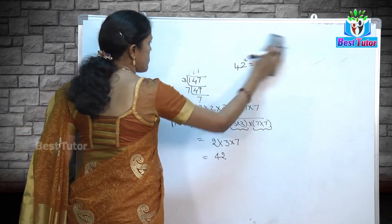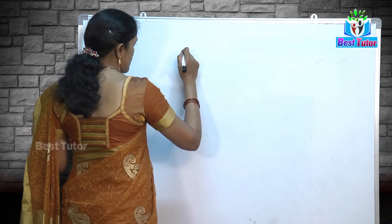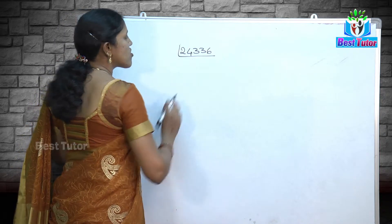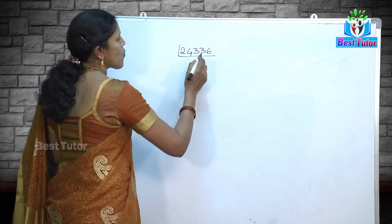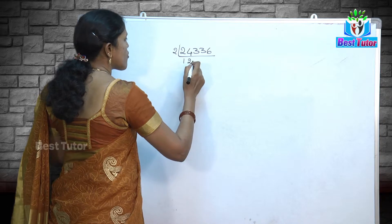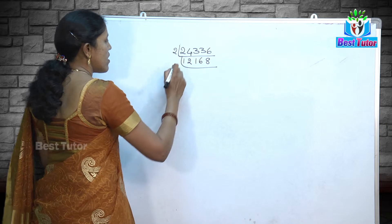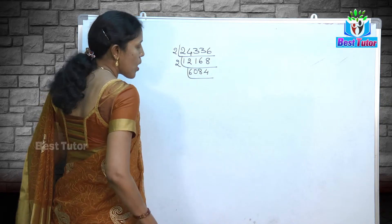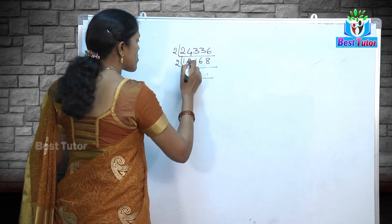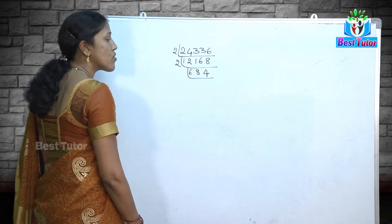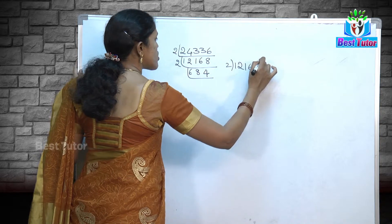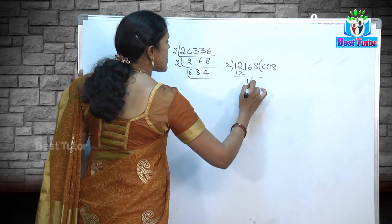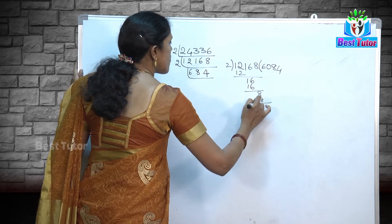Let us move on to the next example: 24336. We need to find its square root. Is it divisible by 2? The digit in the ones place is 6, so yes. Dividing: 24336 divided by 2 gives 12168. Again divisible by 2, giving 6084. Note that a common mistake students make is to skip steps in long division; we must carefully bring down digits with zeros where needed to get the correct result of 6084, then 3042.